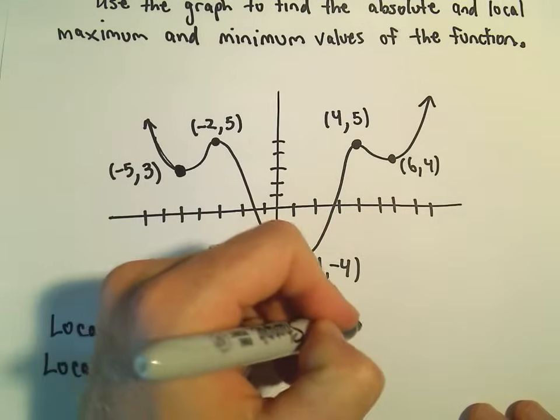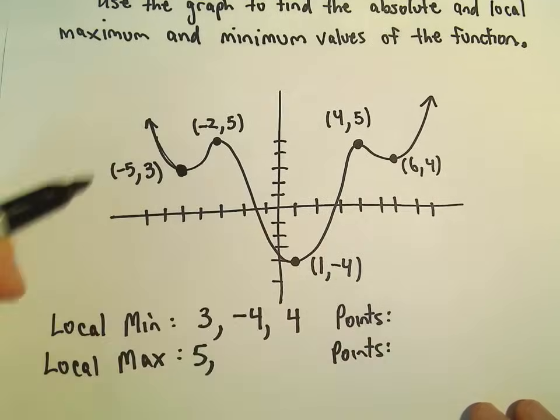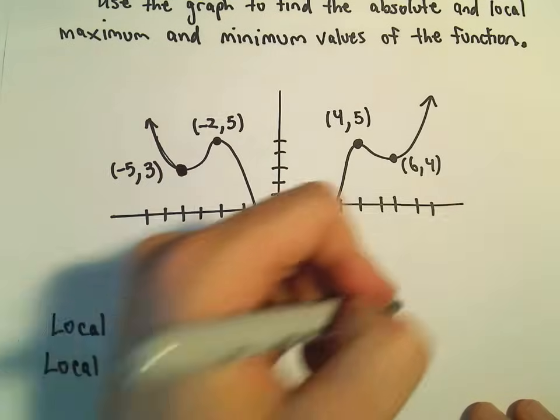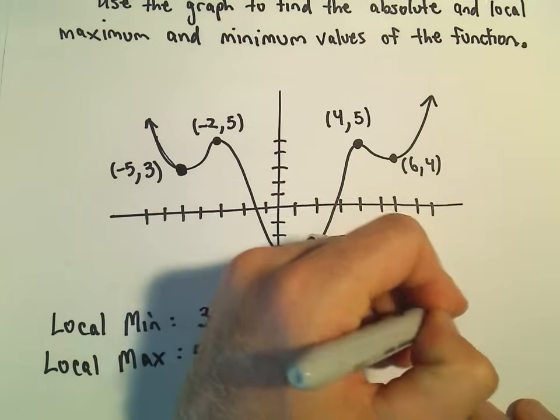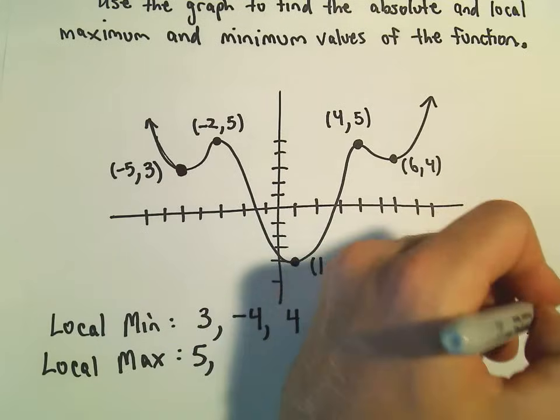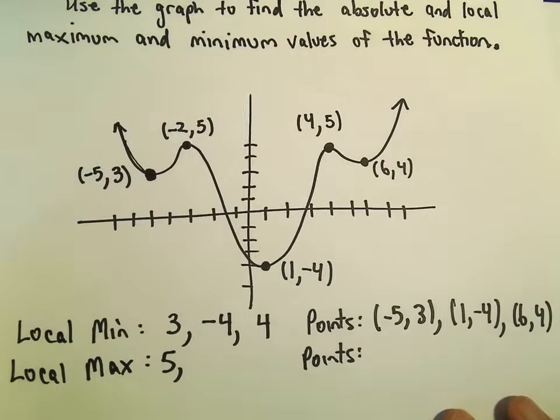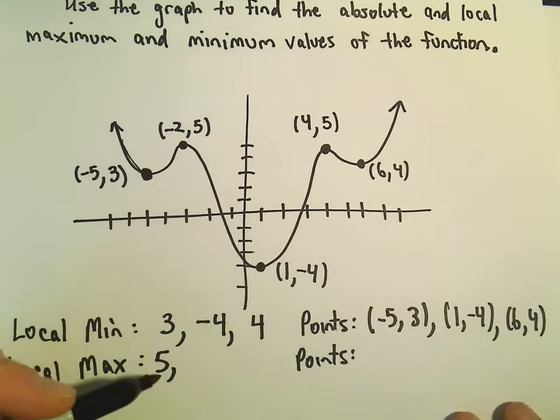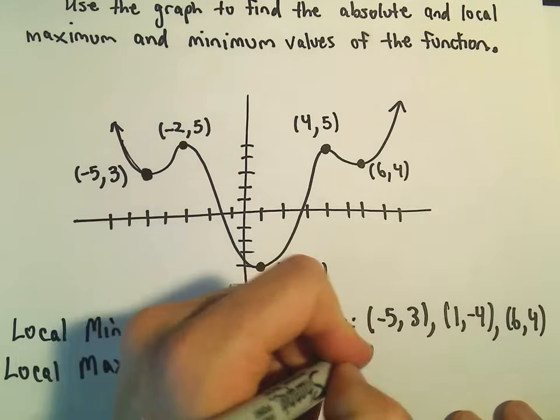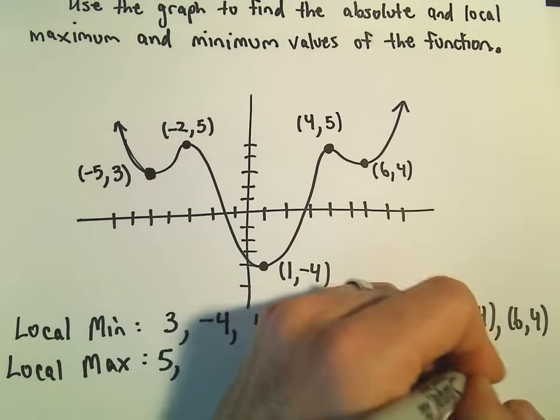If you actually want to specify the points, obviously you just do the same thing. So you could say you have a local minimum at negative 5 comma 3, at the point 1 comma negative 4, and also at the point 6 comma 4. We have local maximums at the points negative 2 comma 5, and also at the point 4 comma 5.